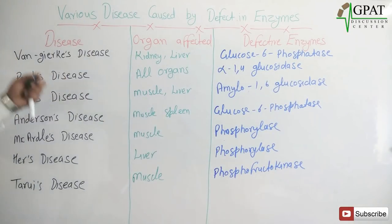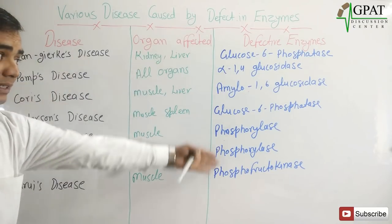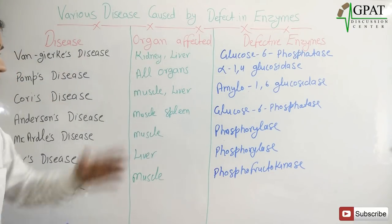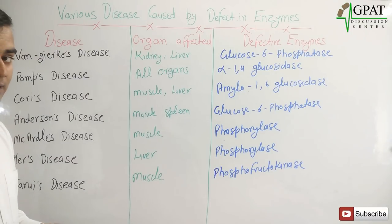These are the important diseases caused by different defective enzymes, and the various organs which get affected by these diseases. Thank you.